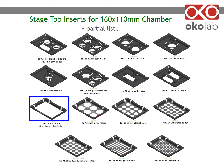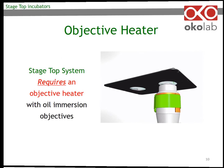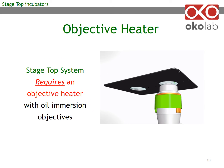This will allow the objective to move freely between wells. If you are using an oil immersion objective, you have to use an objective heater. The objective heater is represented by a heating band, secured around the objective. An oil immersion objective will touch the bottom of the well through the oil and will draw heat away from your sample — this is why an objective heater is required with oil immersion objectives.